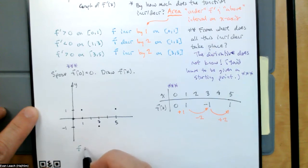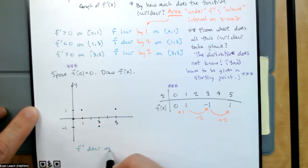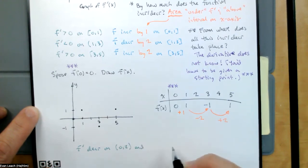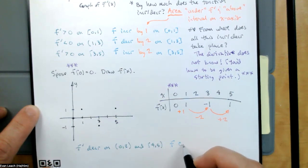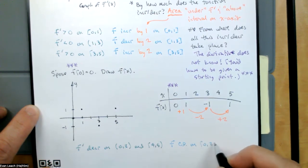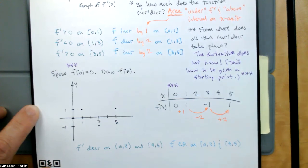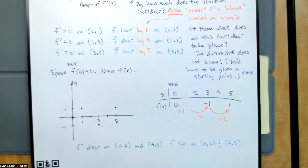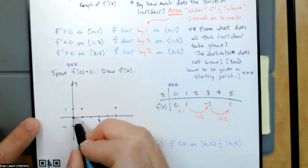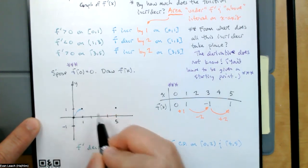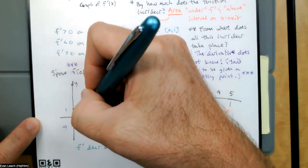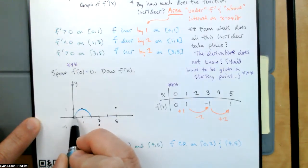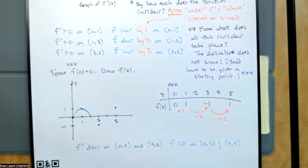Since f prime is decreasing on the interval from 0 to 2 and the interval from 4 to 5, we're going to draw our function concave down on 0 to 2 and 4 to 5. So instead of just going up with a line then down with a line, I'm going to make it concave down on those intervals.